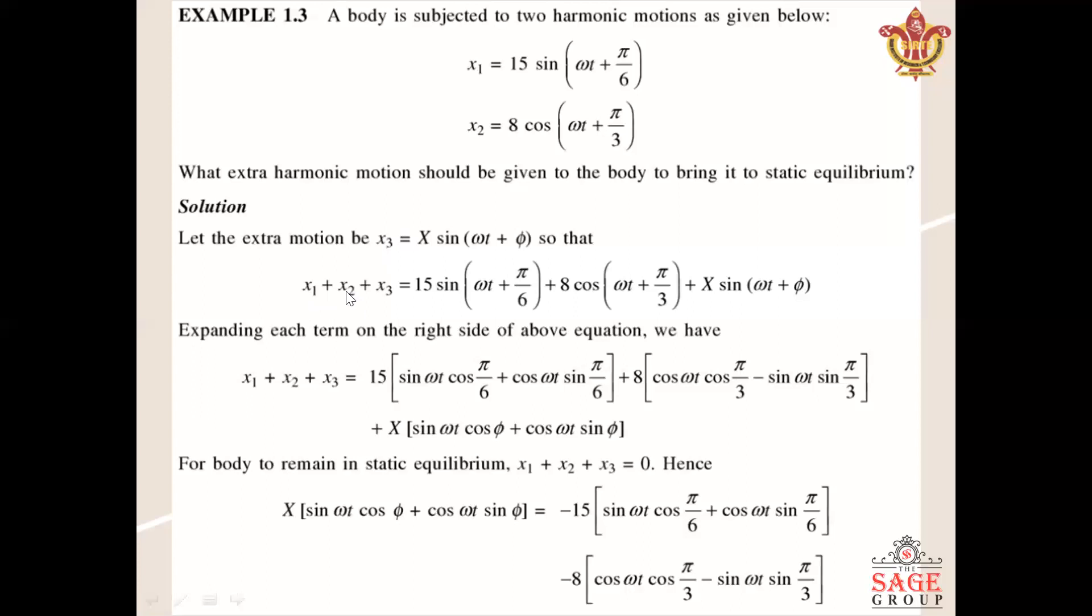So x₁ + x₂ + x₃ equals 15 sin(ωt + π/6) + 8 cos(ωt + π/3) + X sin(ωt + φ). We are adding all the values, and we have assumed that the resultant of the static equilibrium condition will be in effect while taking the effect of x₃. So the overall motion can be zero.